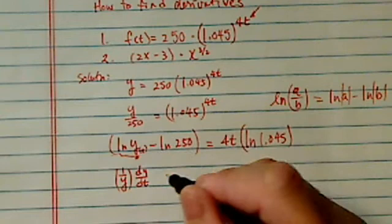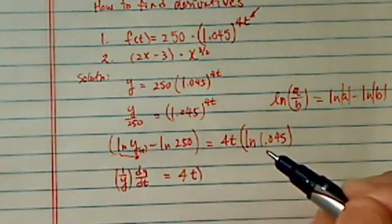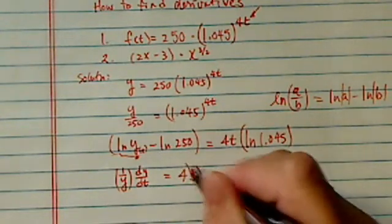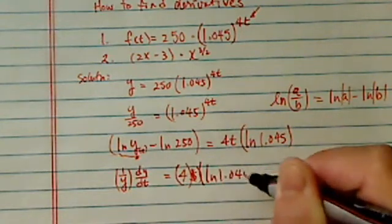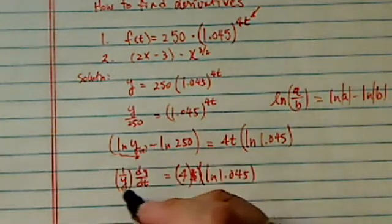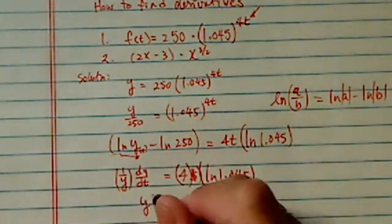This one goes away, and that's equal to 4t, 4, not a t, 4 times natural log of 1.045. Okay, so we're almost there. Now, multiplied by y on both sides, we have y prime, which is this term.